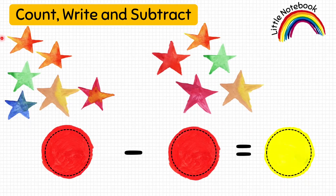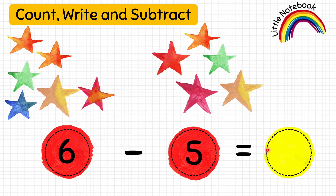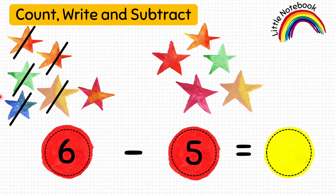Let's count the first group of stars: one, two, three, four, five, six — write six. Then count the second group of stars: one, two, three, four, five — write five in the red circle. So the question is six minus five equals how many stars? Let's subtract five stars — one, two, three, four, five. We are left with only one star, so the answer is one. Six minus five equals one.